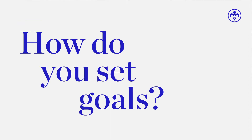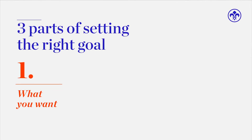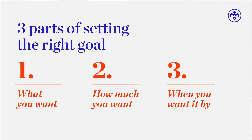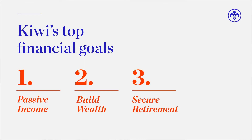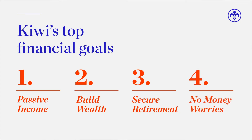You won't make the real money that true property investors who invest for the long term make. There are three things you need to establish for your property investment goal: what you want, how much of it you want, and when you want it by. I've surveyed a number of property investors from around the country, and it comes down to four main categories: passive income, growing their wealth, retirement, and no money worries. You need to select one that resonates with you as your main focus.